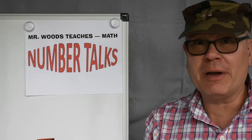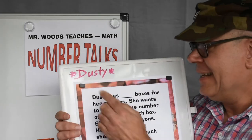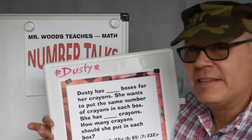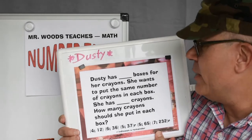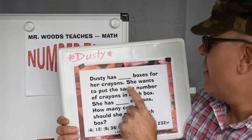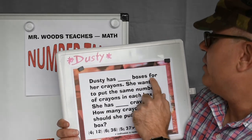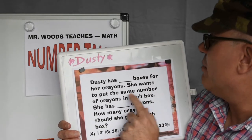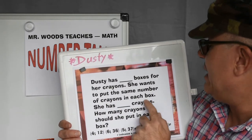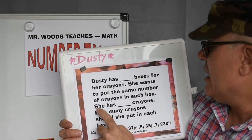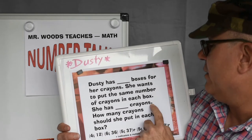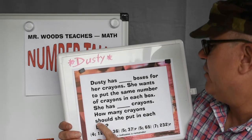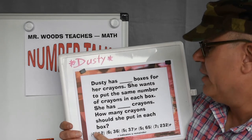Today we're working with my friend Dusty! She's a great friend, and let's get into this really quickly. Dusty has four boxes for her crayons. She wants to put the same number of crayons in each box. She has 12 crayons. How many crayons should she put in each box?